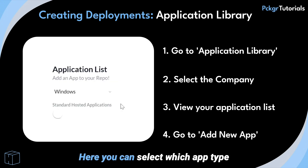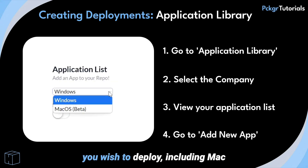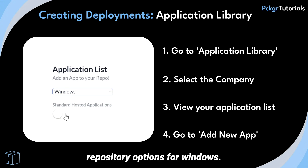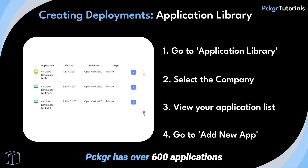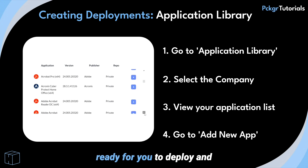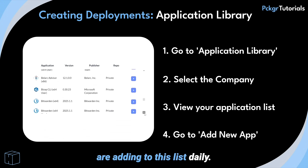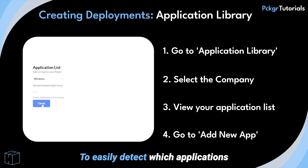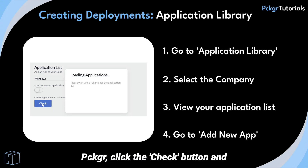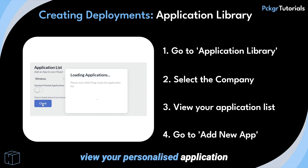Here you can select which app type you wish to deploy, including Mac and Windows, with public or private repository options for Windows. Packager has over 600 applications ready for you to deploy and is adding to this list daily. To easily detect which applications in your Intune can be managed by Packager, click the check button and view your personalized application list ready for deployment.